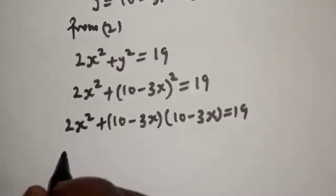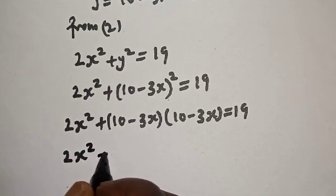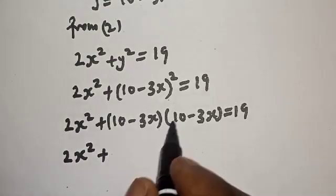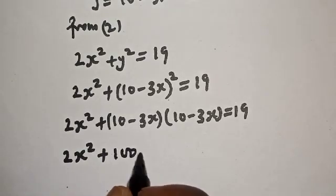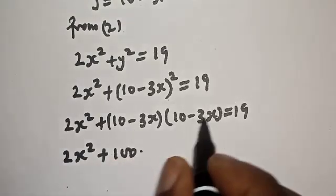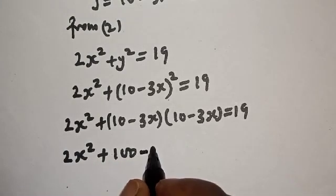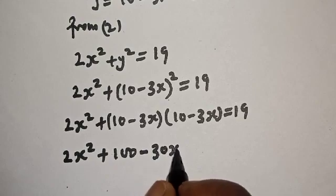Expanding, this is 2x squared plus: 10 times 10, which is 100; plus 10 times minus 3x, which is minus 30x.